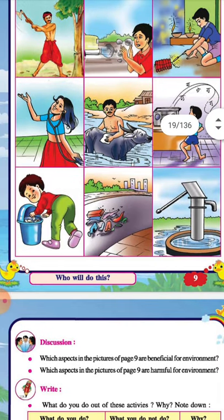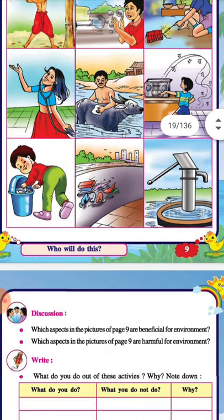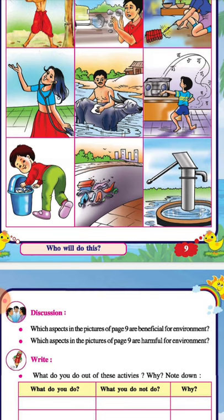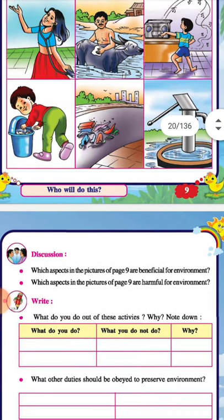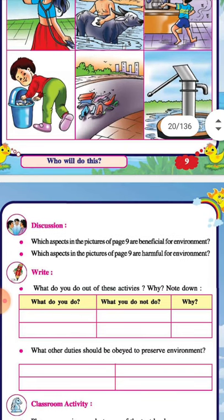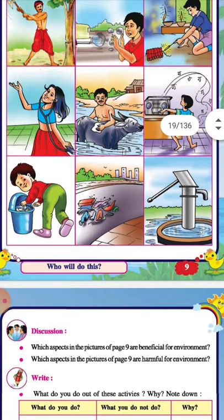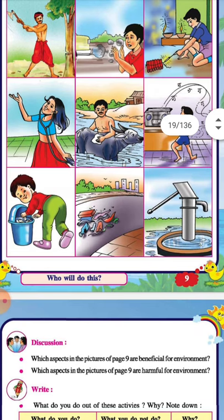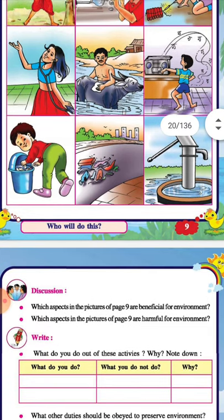In another picture, the man has started a tape recorder at a very loud, high volume. In the next picture, the girl is putting something in the dustbin. Someone else is dumping garbage on the ground. Which aspects of these pictures on page nine are beneficial for the environment? I don't think anything is good except this boy throwing garbage in the dustbin. Almost everything else is harmful.